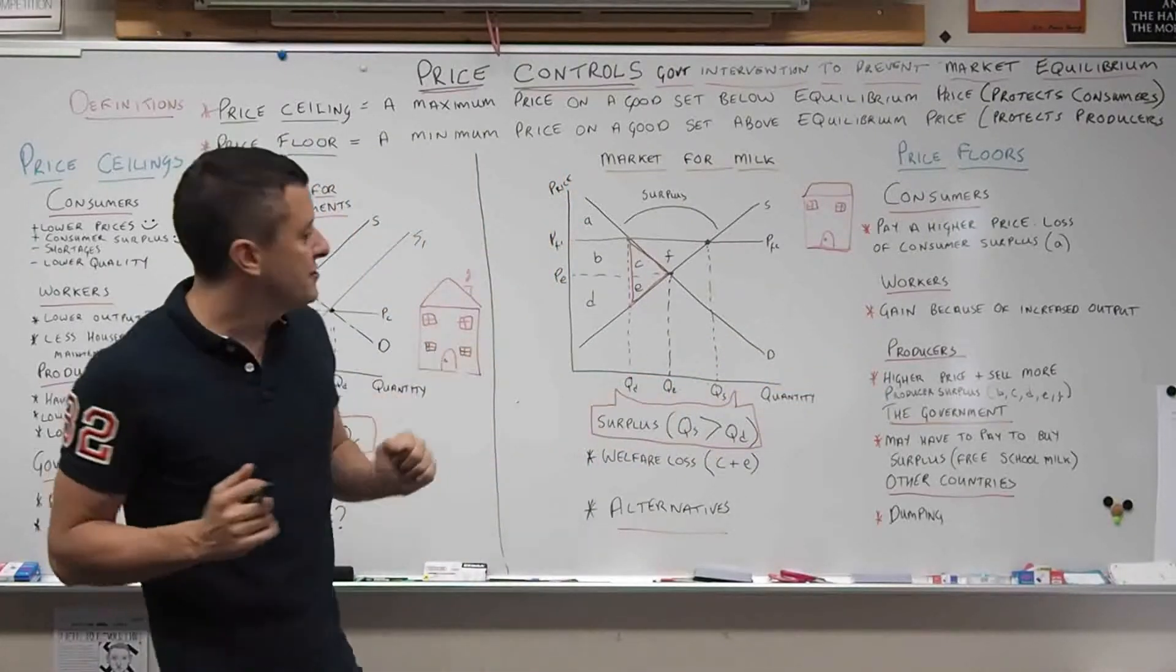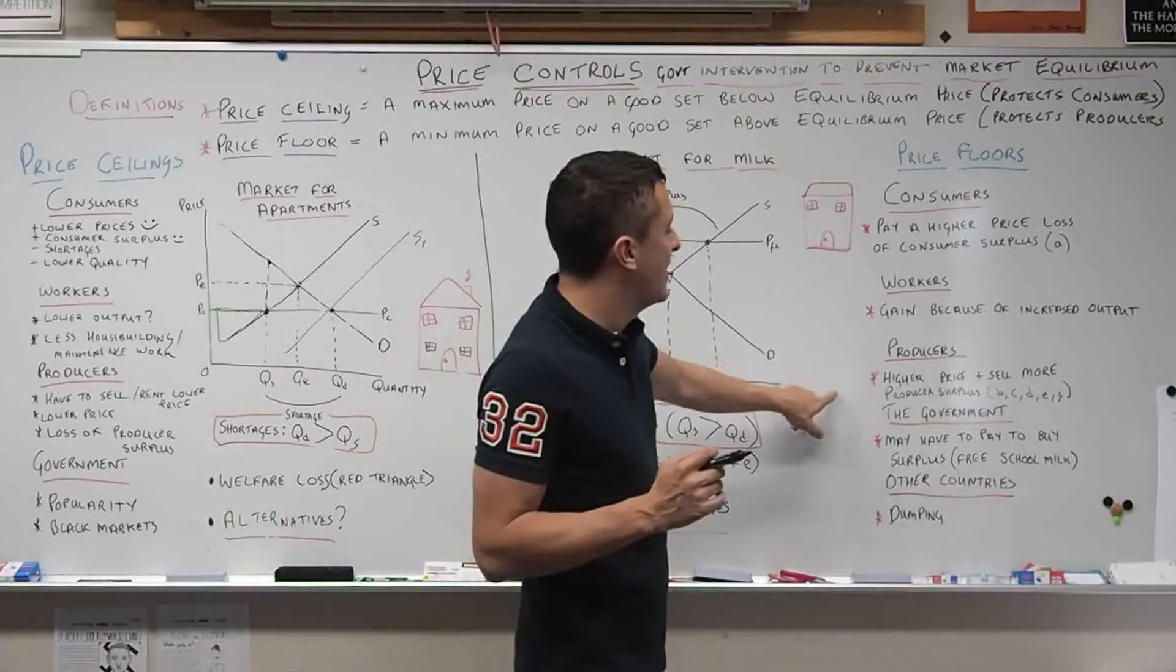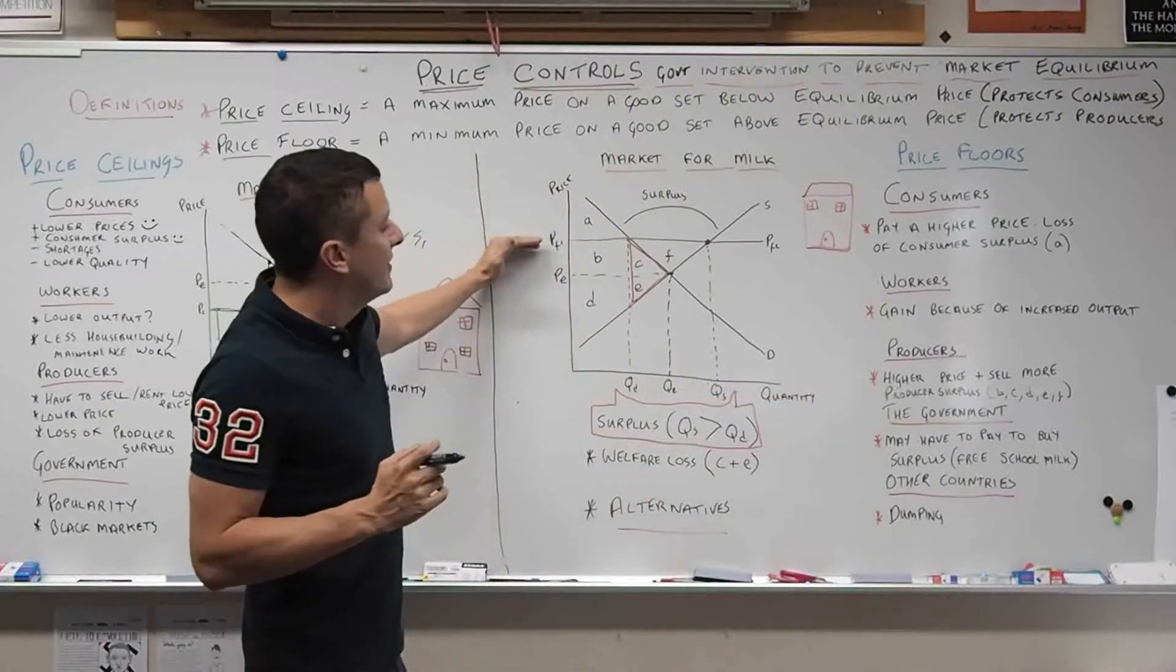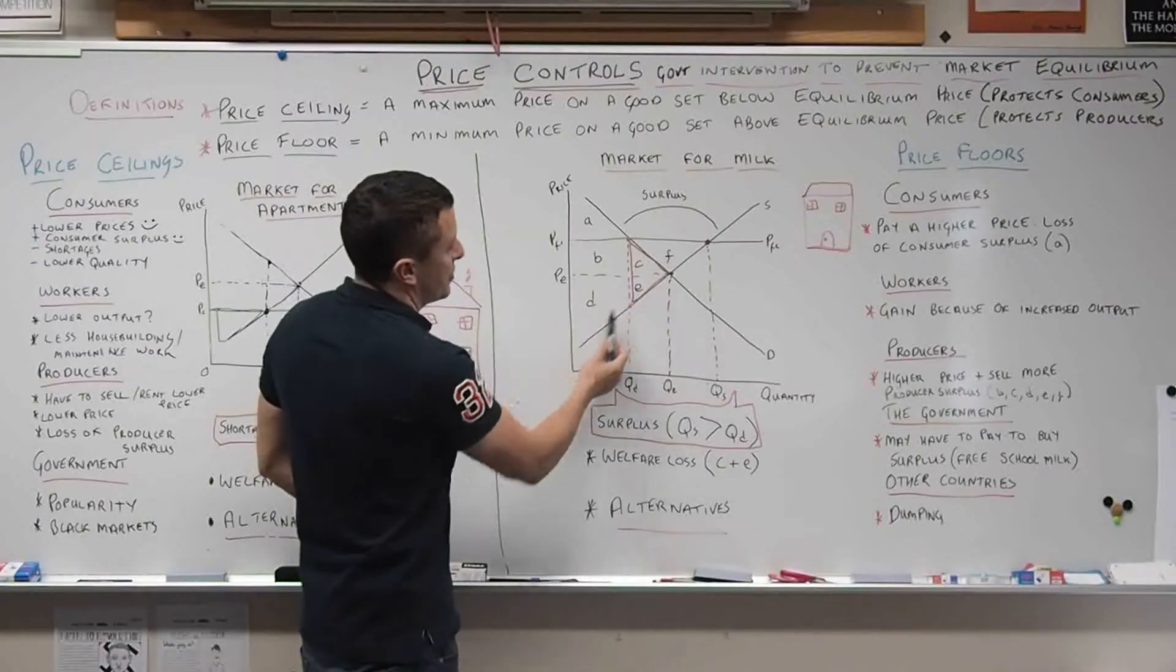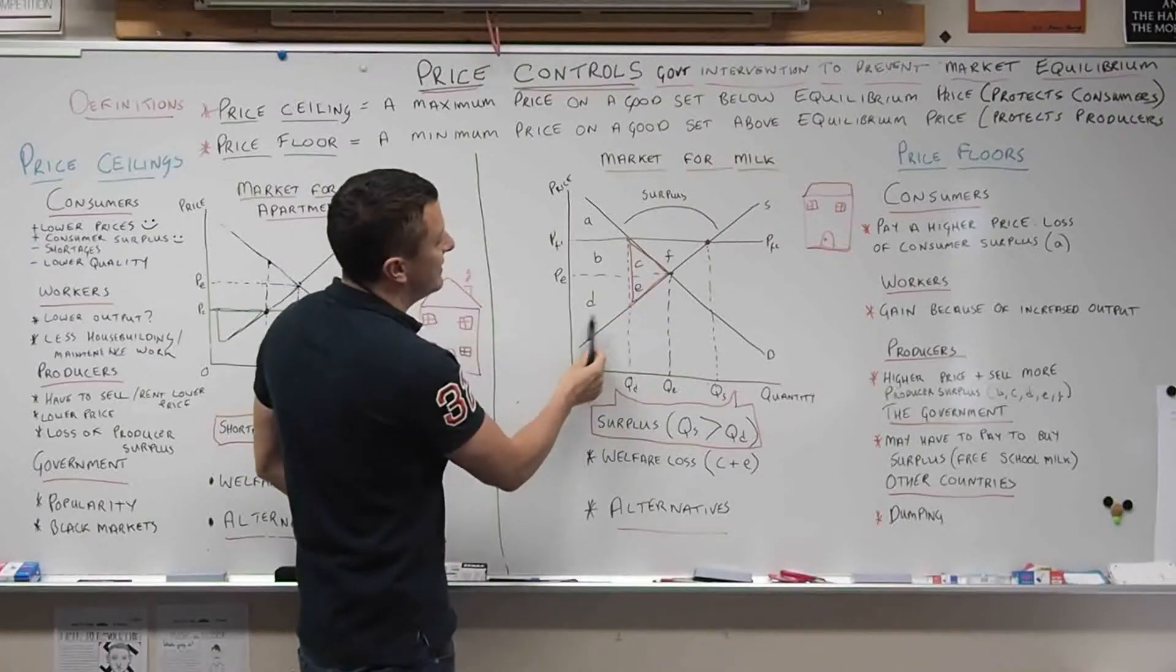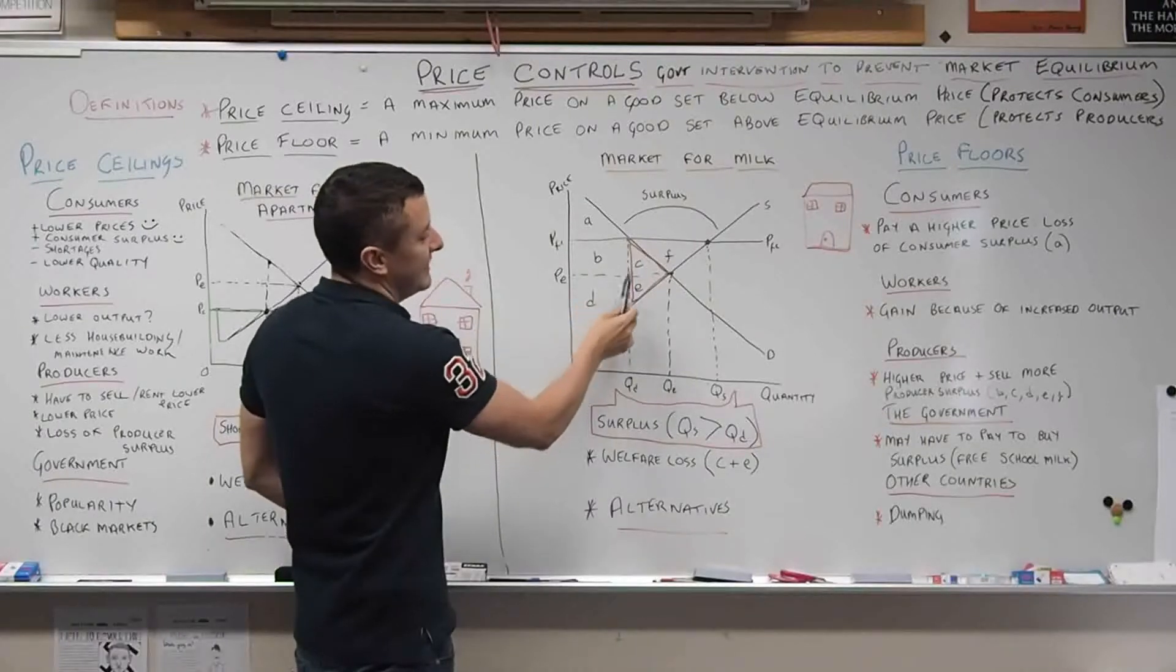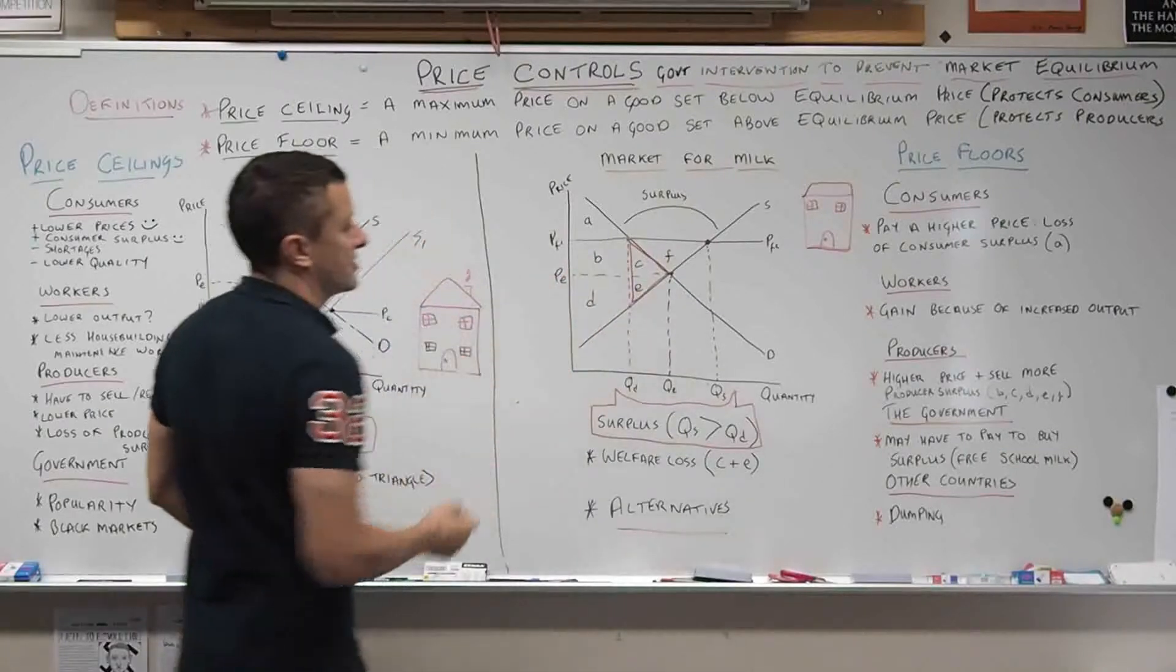Now we'll think about producers. The producers are now selling at a higher price, PFL. Therefore the producer surplus has increased from DE to BCD EF. So their producer surplus is much larger.